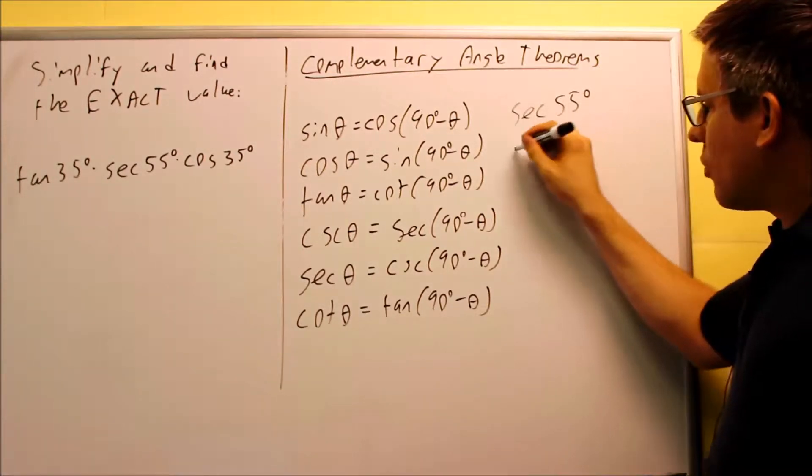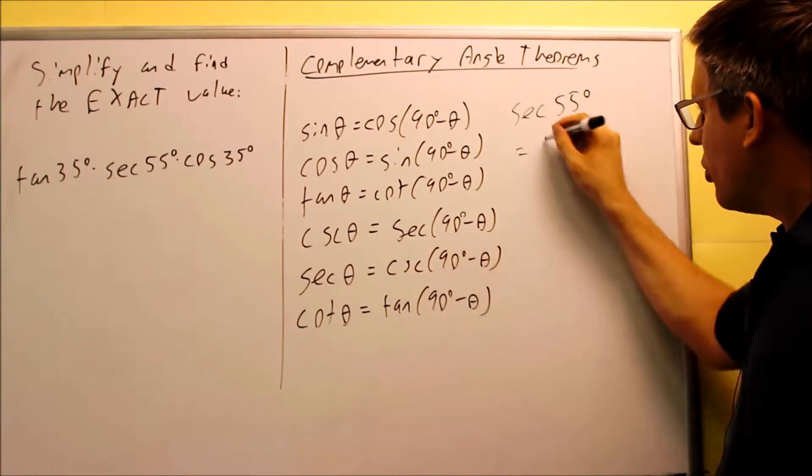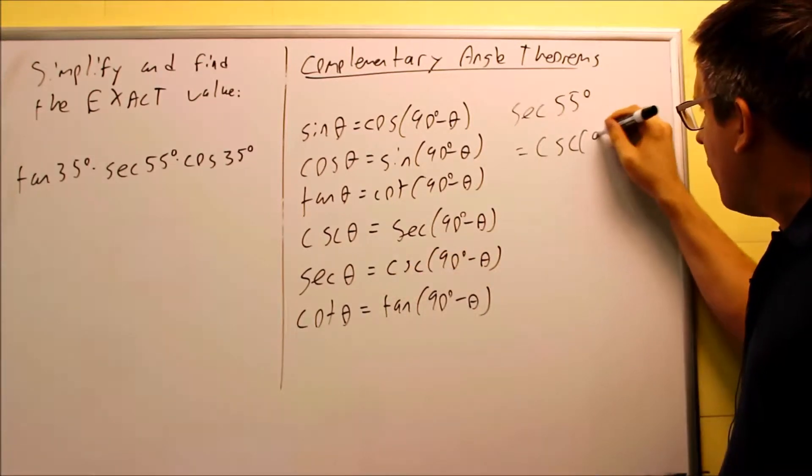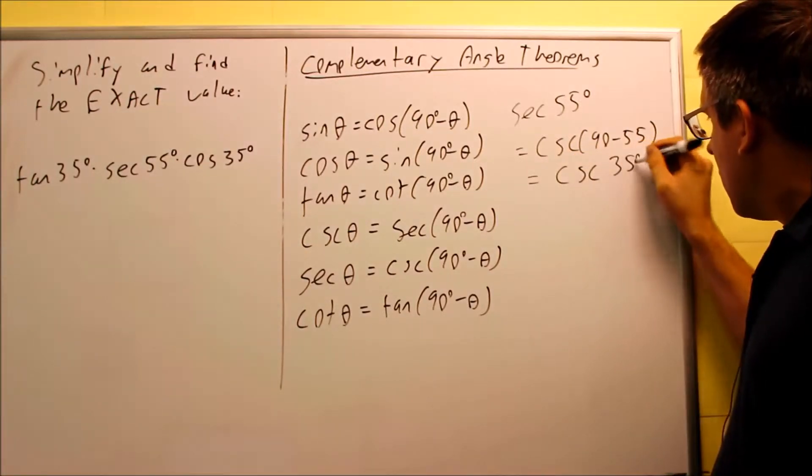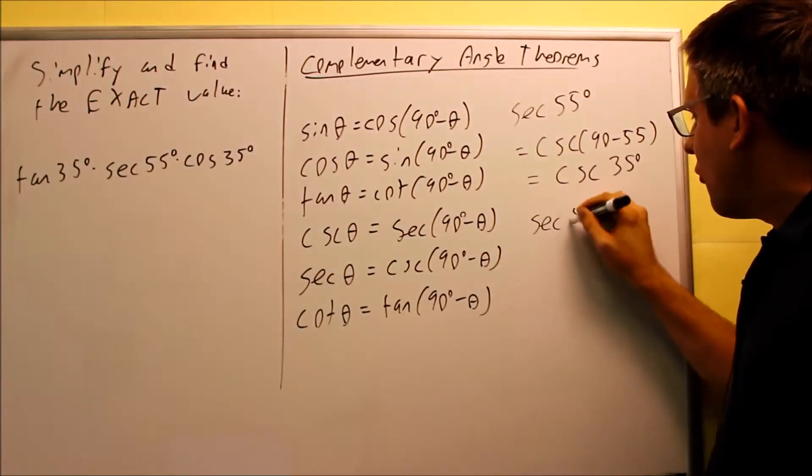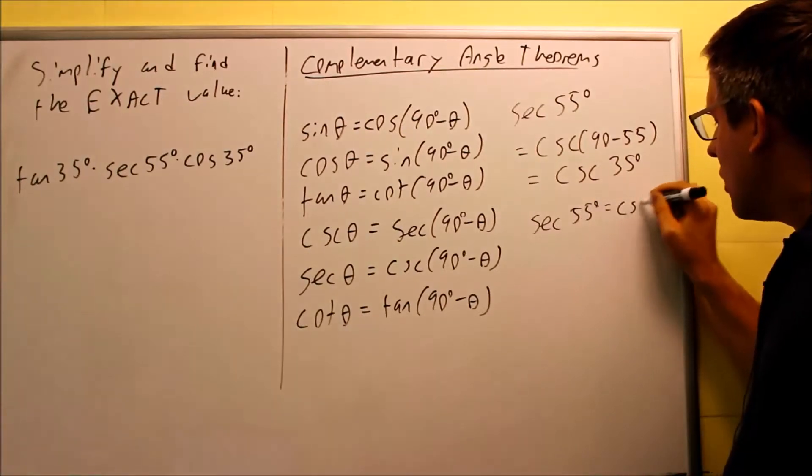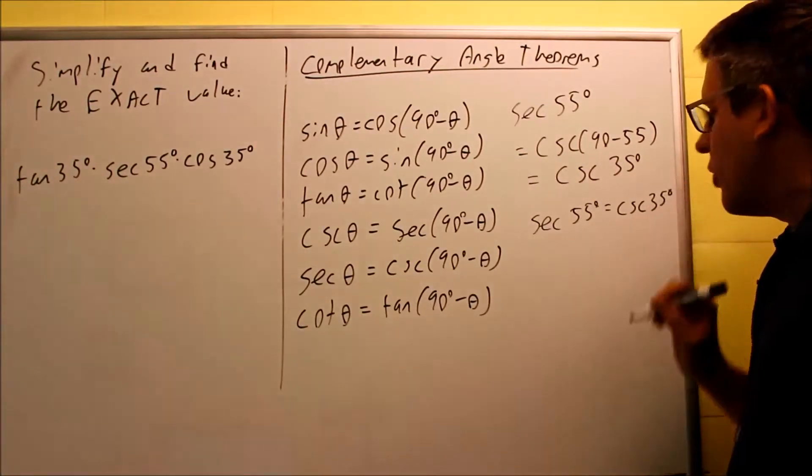So if I do secant 55 degrees, I'll do that here, that's going to be equal to, here's a formula we're going to use, cosecant of 90 minus 55, which is equal to cosecant 35. So, secant 55 degrees is the same thing as cosecant of 35.